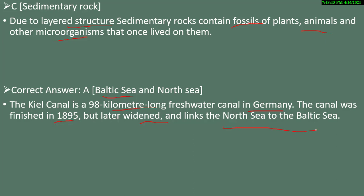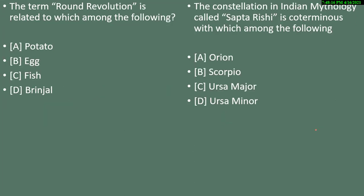Fifth question: the term 'Round Revolution' is related to which of the following? Options are potato, egg, fish, or branch. Round Revolution is related to potato. Sixth question: the constellation in Indian mythology — what is it called? It is associated with Ursa Major.